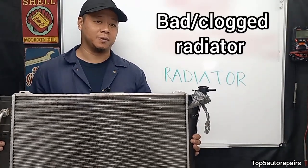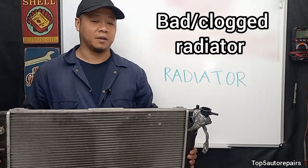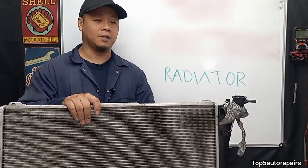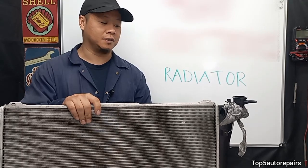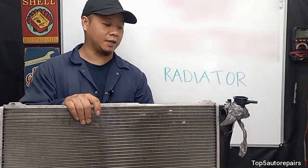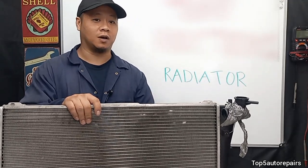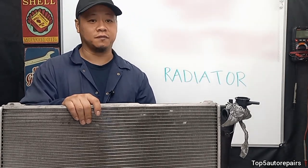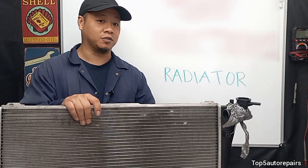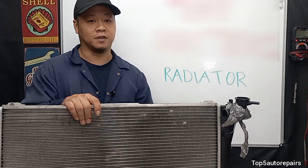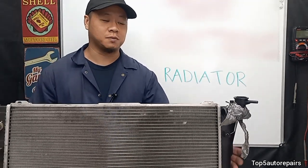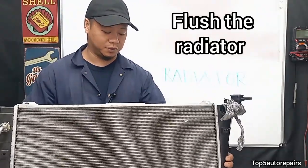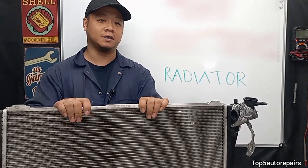The next common problem is going to be a bad radiator. Coolant should flow throughout the radiator in a smooth fashion. If coolant is flowing and there's some sort of interruption due to clogs or something similar, this can again cause an interruption in cooling flow and contribute to that irregular temperature fluctuation. If you suspect you have a bad radiator, you probably should flush it out — hopefully that will fix the problem.